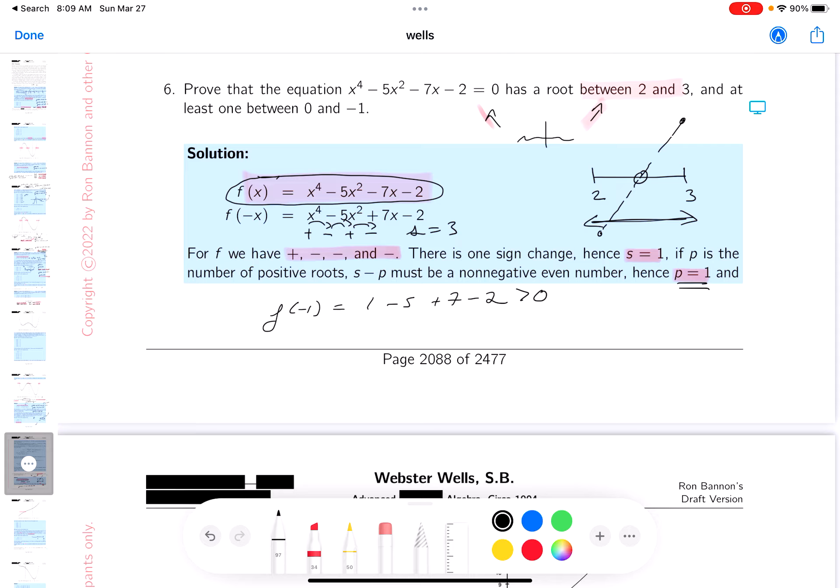Now what happens? Let's do the f of minus 2. At some point things are going to become somewhat obvious. That's 16 minus 20 plus 14 minus 2. Definitely positive.